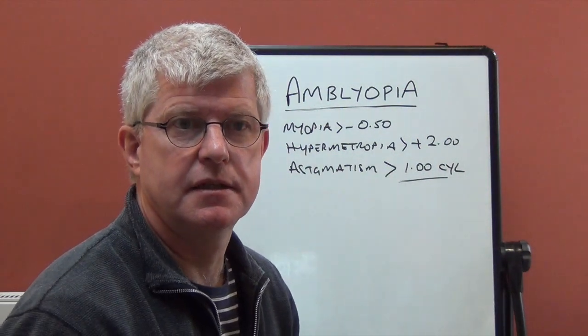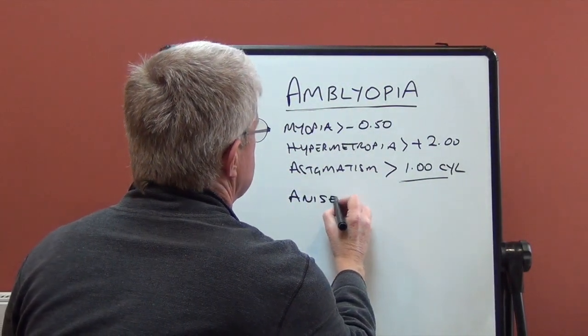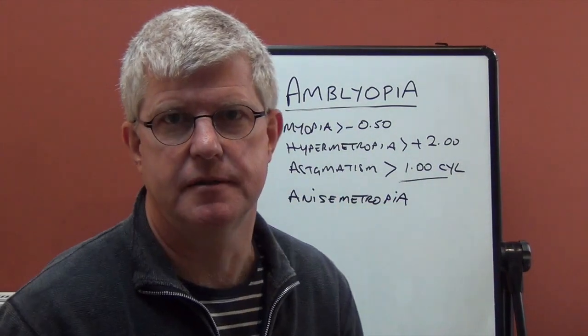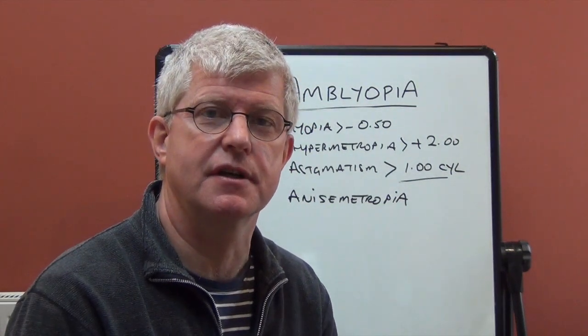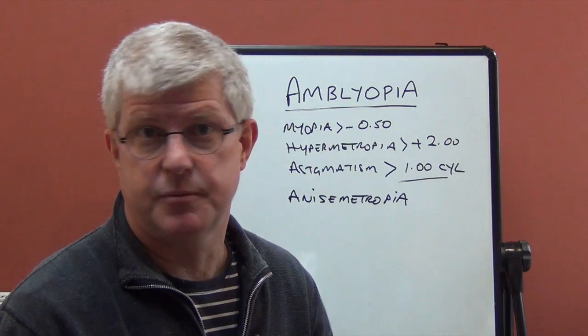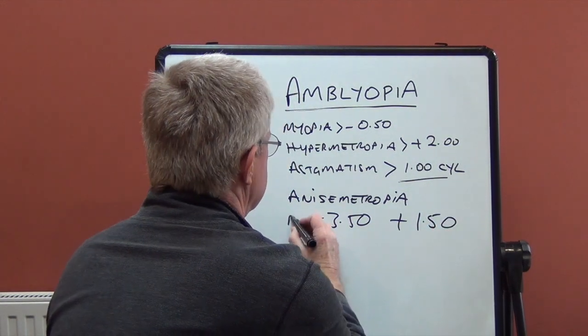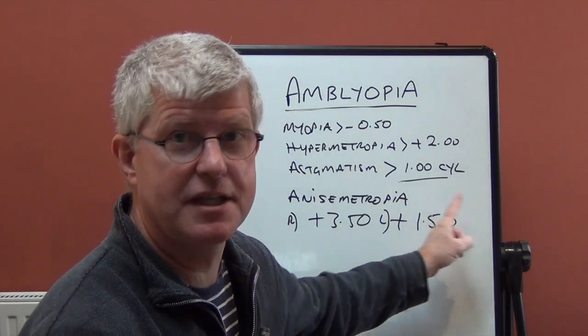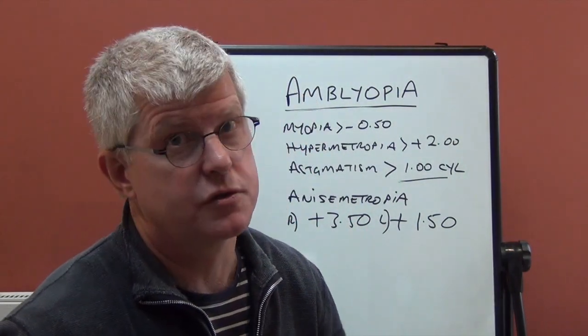Anisometropia is another form of refractive amblyopia. Anisometropia. That's where you have two very different powers in each eye, where the refractive error between the two eyes is quite significant. The brain will then focus on the better eye and suppress the weaker one. So if, for example, you've got a plus 3.50 in one eye and a plus 1.50 in the other, there's a big difference between those two. And the brain will concentrate on the better eye, the least blurred image. It will concentrate on that one and it will suppress the other one. So anisometropia is another cause of amblyopia.